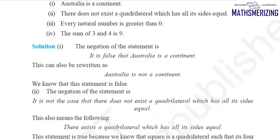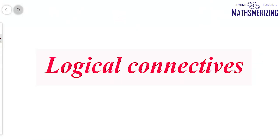For example, suppose the statement is 'There exists a natural number which is not greater than zero.' The negation of this statement is simply 'Every natural number is greater than zero.' After these three connectives — disjunction, conjunction, and negation — we will study implication.